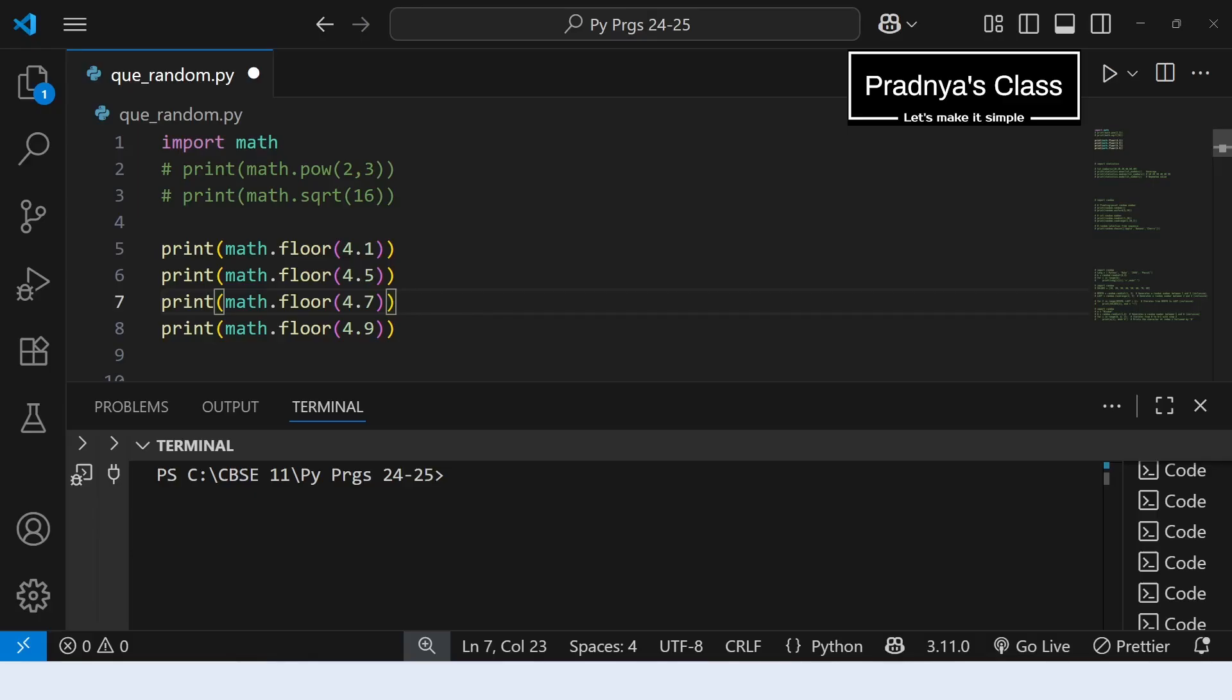Once again we are in VS code. Let's check out the result of the floor function for different values. Here we are. The floor function gives the lowest integer.